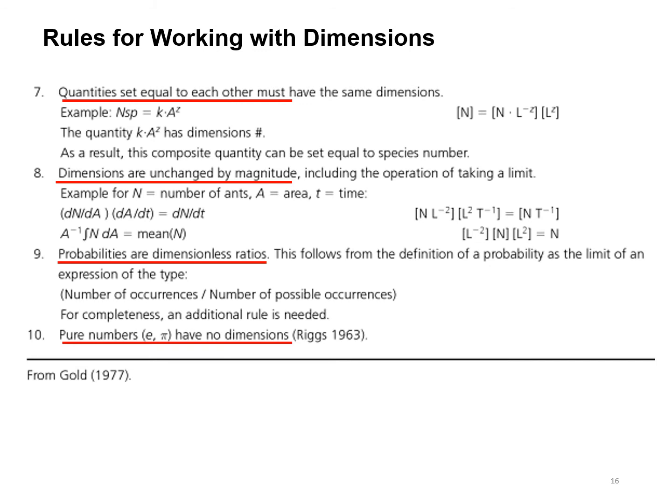Quantities set equal to each other must have the same dimensions. When we're going to look at modeling and updating the values of certain amounts, say the amount of biomass in a system, when we have equations that predict a value to be added to biomass, those units ought to have the same dimensions. In this case, newtons equal to newtons per distance squared times a distance squared. If the right hand does not equal the left hand in terms of its dimensions, then you can't make that assignment.